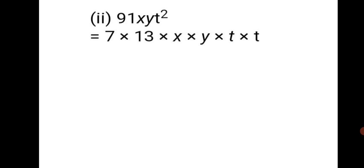Question 2: 91xyt². Dividing 91 by 7 gives factors 7 × 13. x has no power so we write just x; y also has no power so we write just y; t² is written as t × t. So the final answer for 91xyt² is 7 × 13 × x × y × t × t.